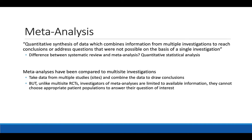Meta-analyses have been compared to multi-site investigations in that they take data from multiple different studies — like taking data from multiple different sites — and combine the data to draw new conclusions. But unlike multi-site randomized controlled trials, investigators of meta-analyses are limited to available published information. We're not enrolling patients or gathering new data; we are using existing data. Because of this, they cannot choose appropriate populations to answer the question of interest the way you could by adding patients or sites in an RCT.